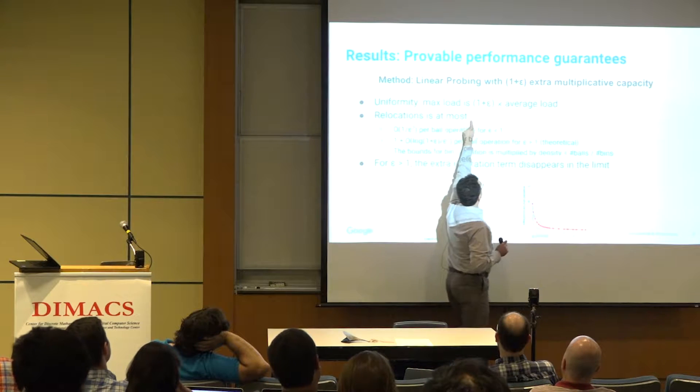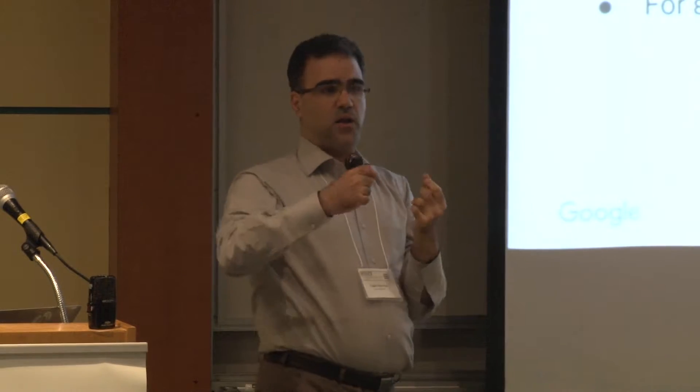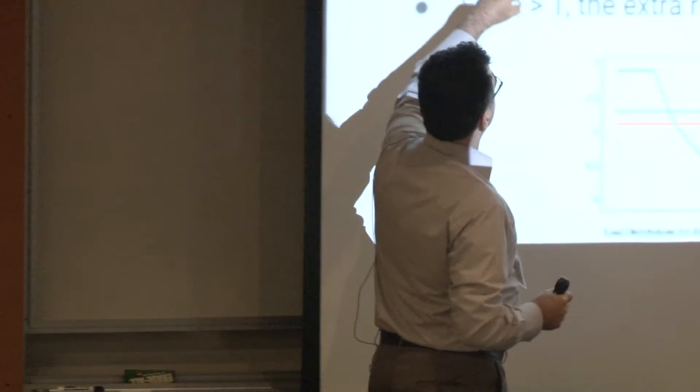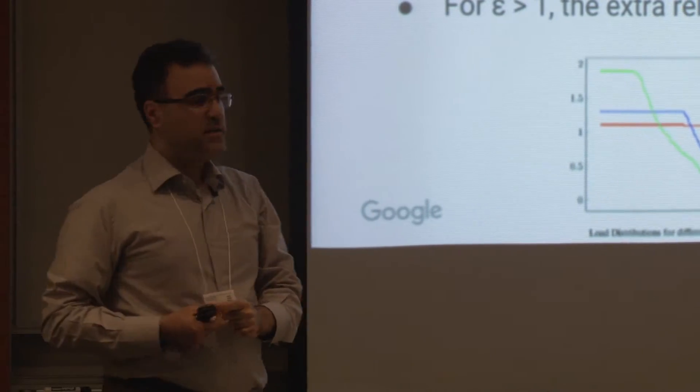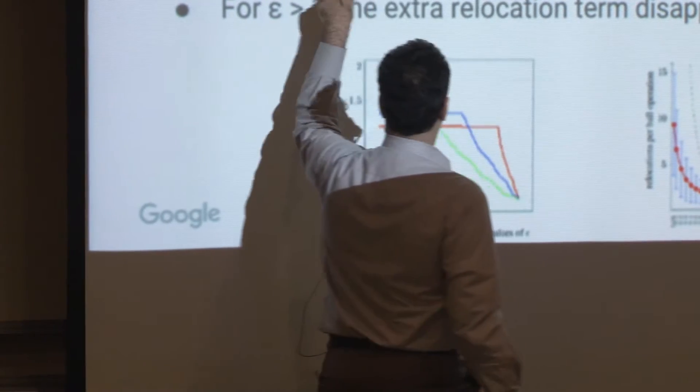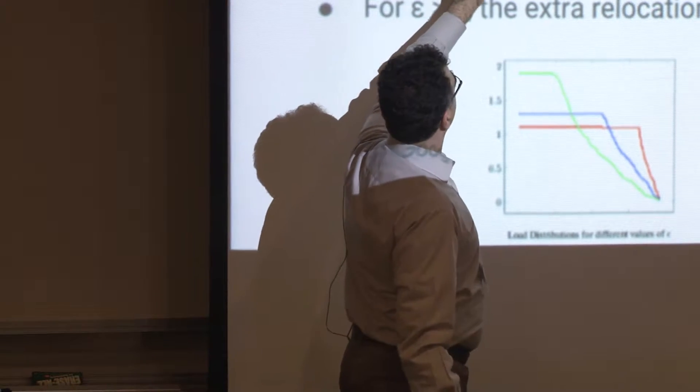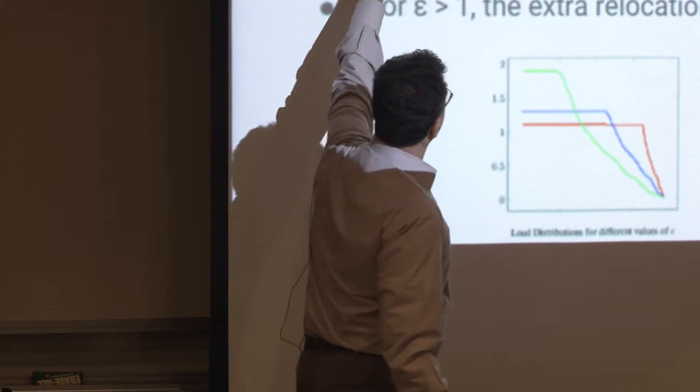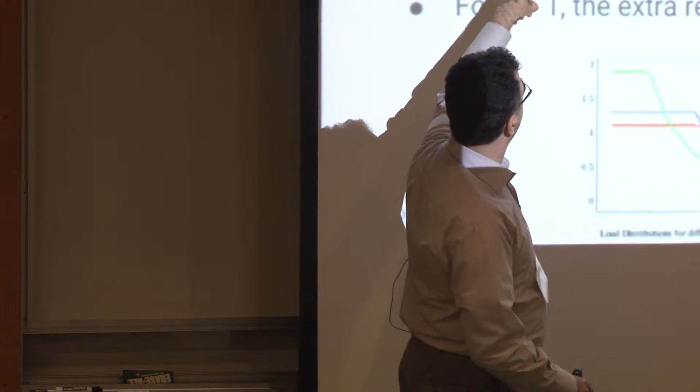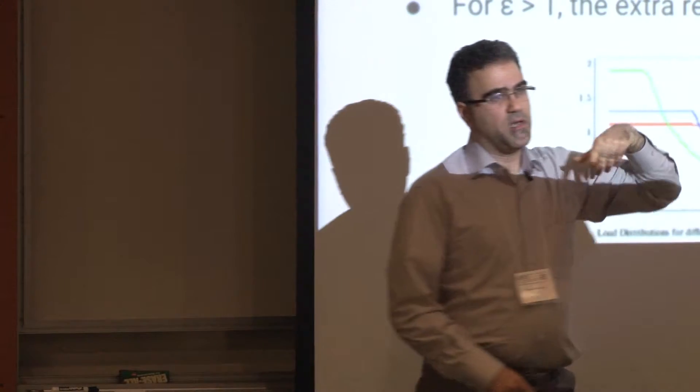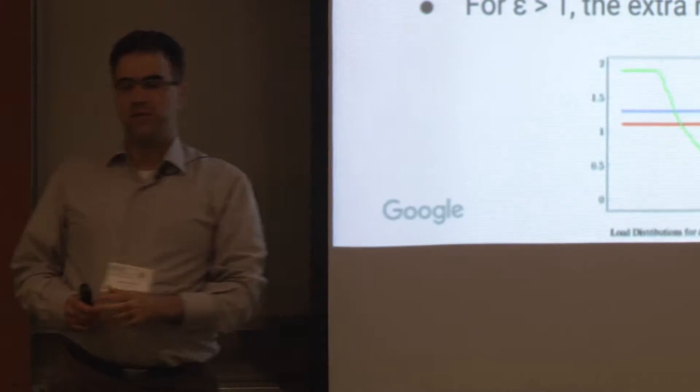What do we achieve more rigorously? In terms of uniformity, we achieve exactly 1 plus epsilon times the average load. It's our choice what is the load that we want to go after. We can go after hard capacity even. In terms of the number of movements, if epsilon is less than 1, we get 1 over epsilon squared per ball operation. If epsilon is greater than 1, we get much better performance: 1 plus log of 1 plus epsilon over epsilon squared. The interesting thing about this part is that the bound goes to 0 or little of 1 as epsilon increases. So basically we are saying that for epsilon greater than 1, the extraordinary location disappears in the limit.